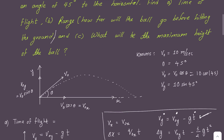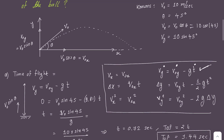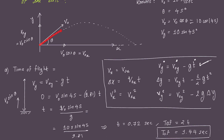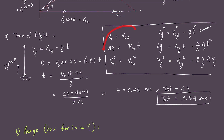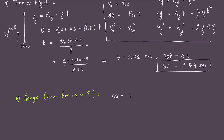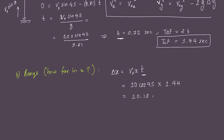Part B is range — how far in X does the ball travel. Range is the horizontal distance from launch to landing. Using the X-direction equation ΔX = V₀ₓ × T, where T is the total time of flight: ΔX = 10cos45° × 1.44 = 10.18 meters.